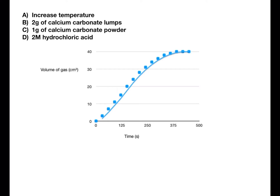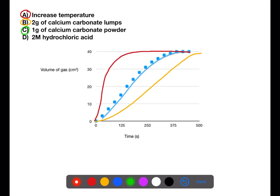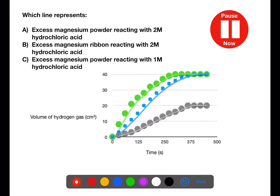This graph represents the reaction between two grams of calcium carbonate powder with excess one molar hydrochloric acid at room temperature. We can add lines to show what happens if we change the conditions. If we increase the temperature, the reaction will be faster and steeper at the start, finishing at the same point but more quickly. If we use lumps instead of powder, the reaction will be slower but still give off the same volume of gas. If we halve the mass of powder, we halve the volume of gas produced. If we increase the concentration of acid, the reaction is faster but still gives off the same volume of gas.